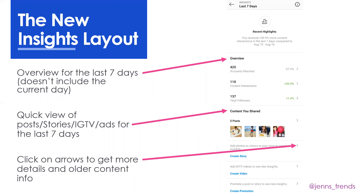Now you have a single page. At the top it gives you your recent highlights — a quick recap of basically what you just saw in the data below. This gives you accounts reached, which is your audience engagement, then your content interactions, and your followers data. You also see the content you shared, so all posts from the last seven days appear there. If you haven't shared a post it says 'create post.' There are little right-hand arrows next to each content type — posts, stories, videos, promotions — and those arrows allow you to dive deeper into each type of content.